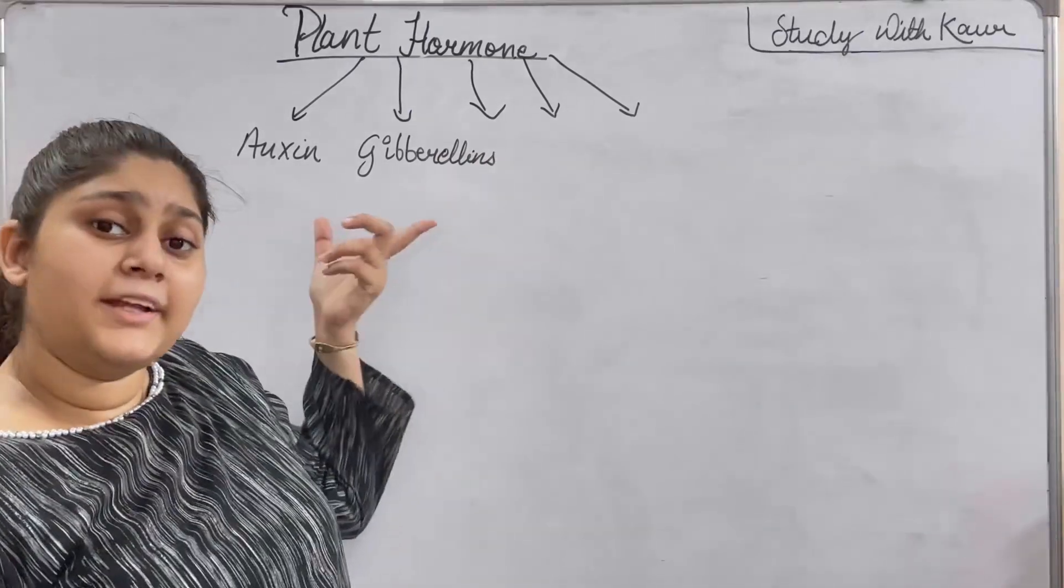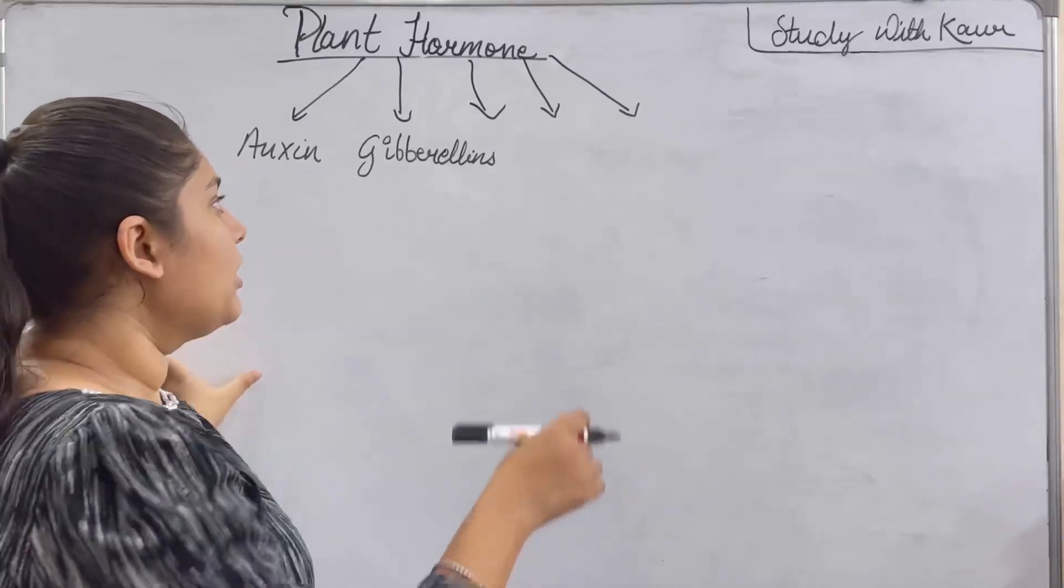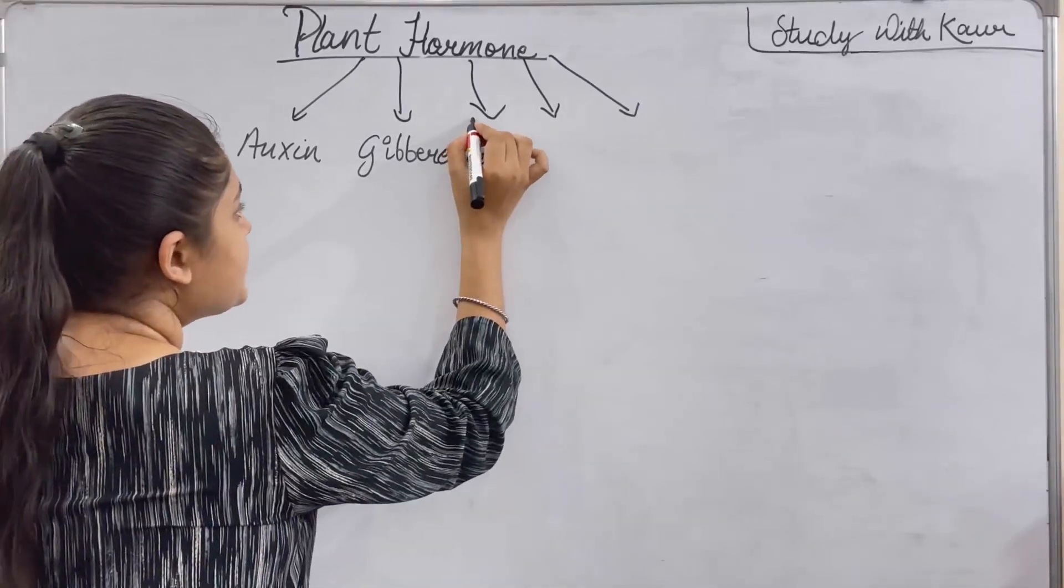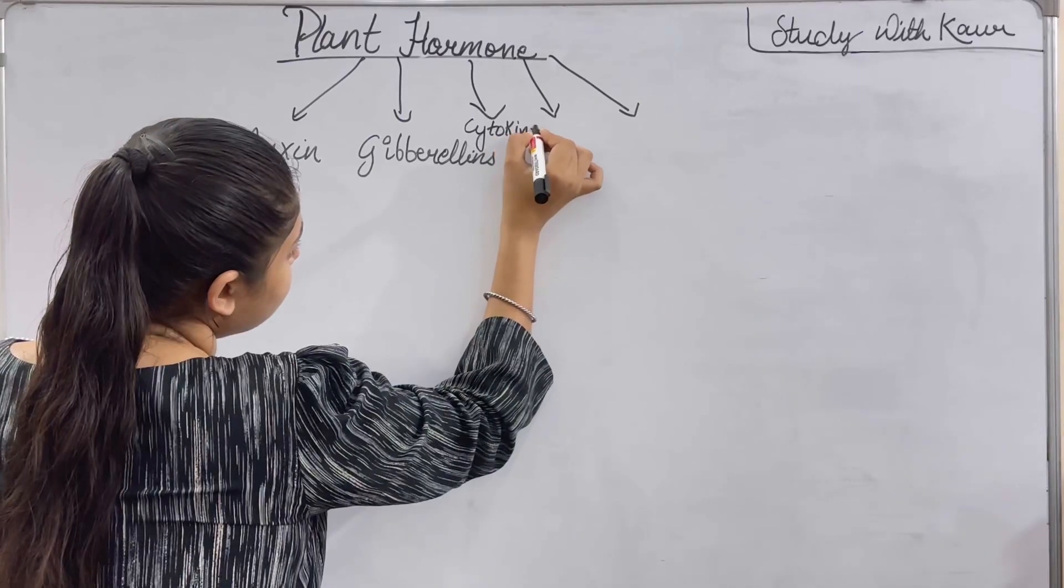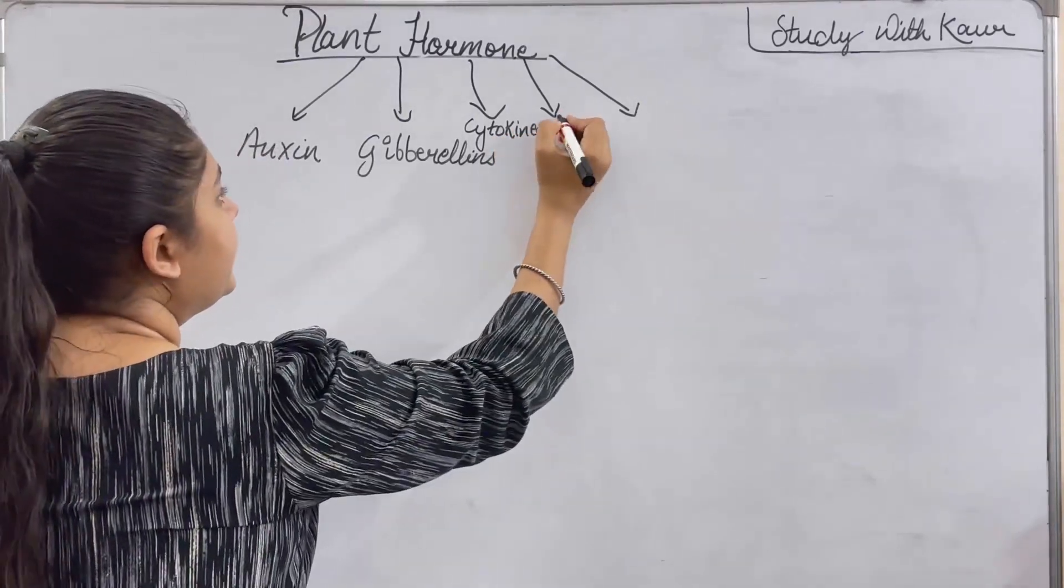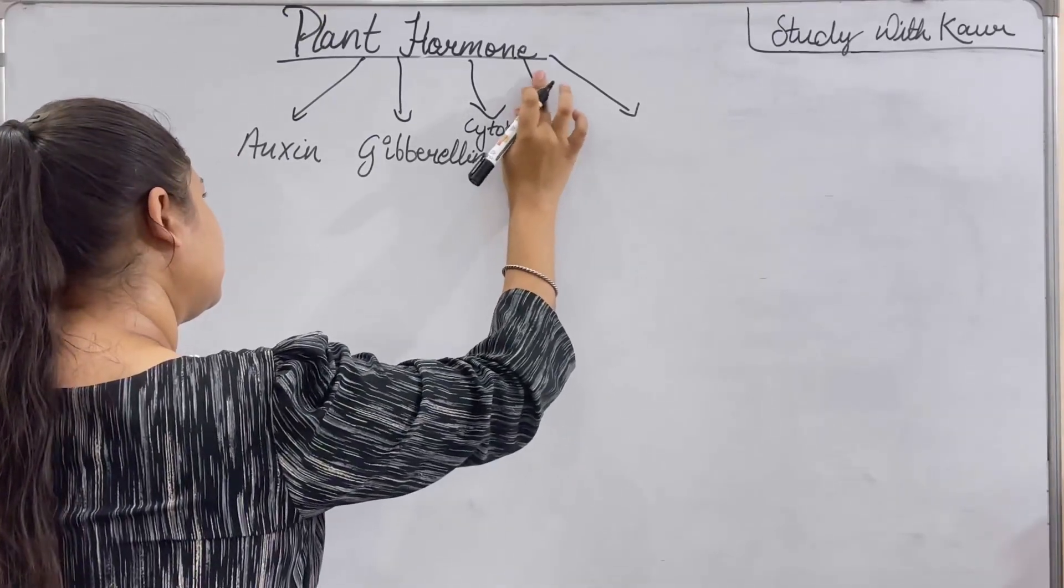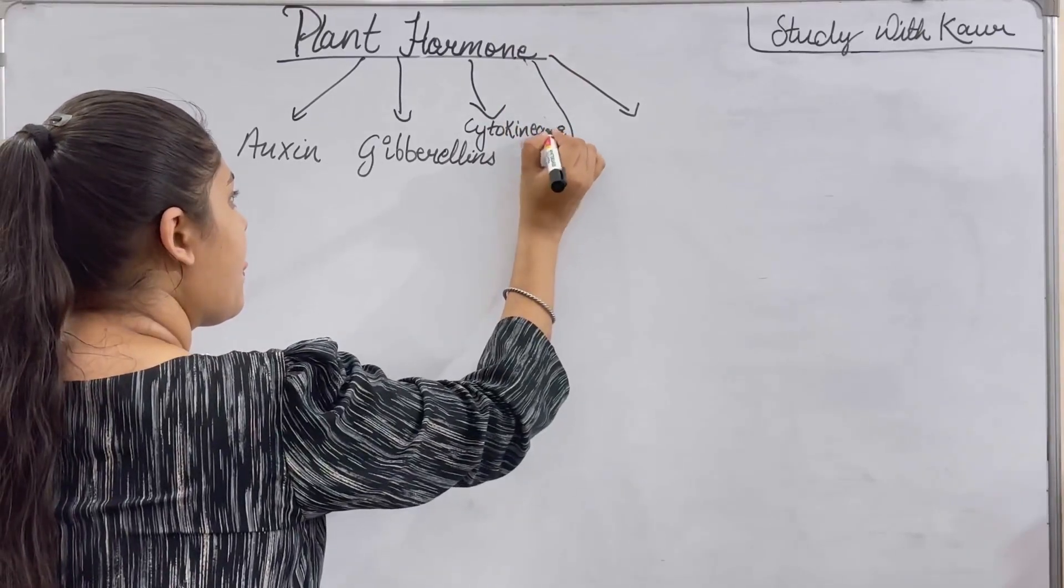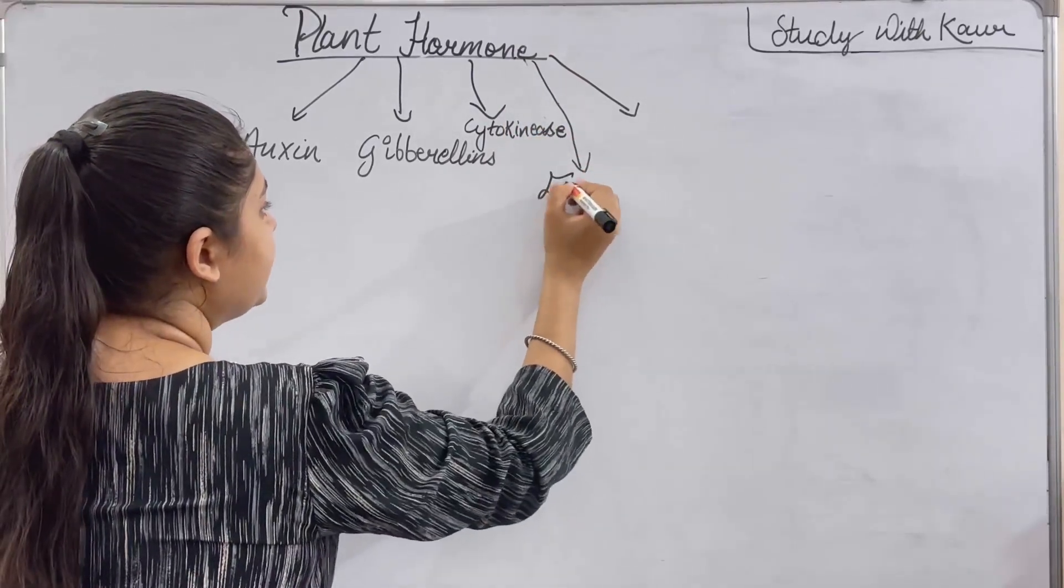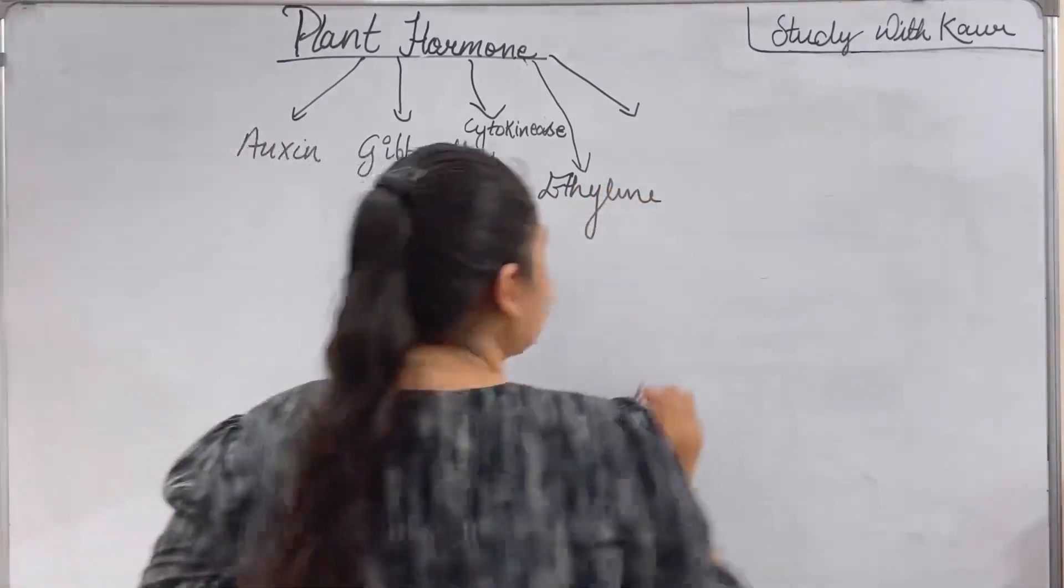Okay. Please mind the spelling of gibberellin. It's double B double L. Okay. Then it is cytokinins. Then ethylene. Let me write over it. Then ethylene. Then abscisic acid.